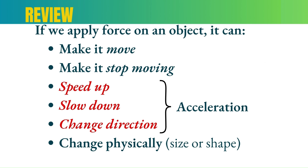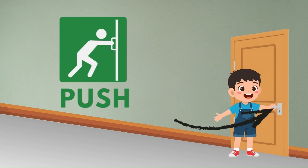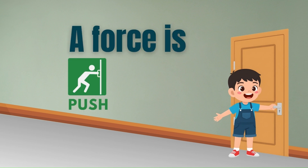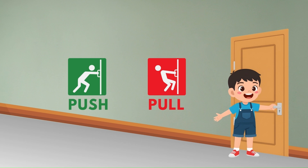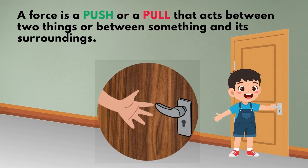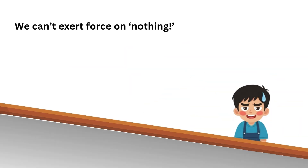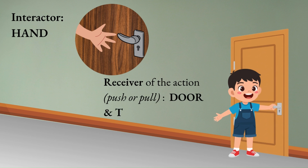Now, let's zoom in on the key part of the definition. Force is an interaction. It means a force always involves two objects — one thing doing the pushing or pulling, and another thing being pushed or pulled. Remember, you can't push or pull nothing. There always has to be an interactor and a receiver.